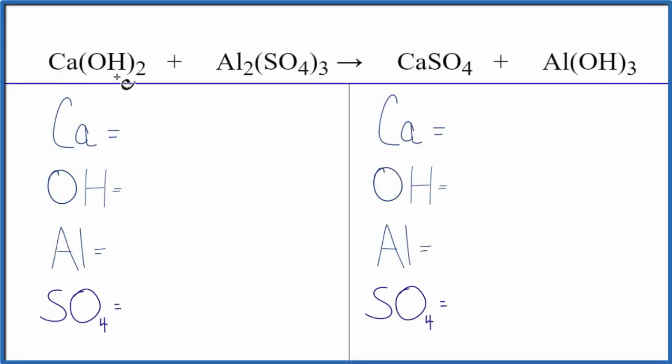To balance this equation, calcium hydroxide plus aluminum sulfate, let's add the atoms up on each side of the equation.